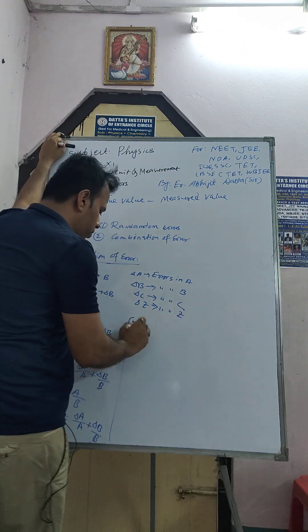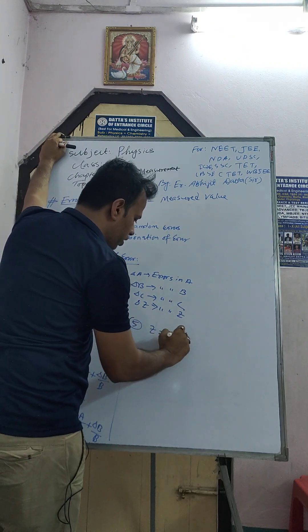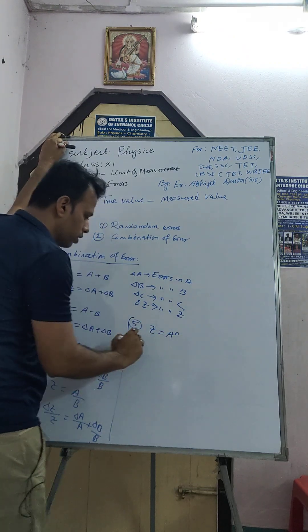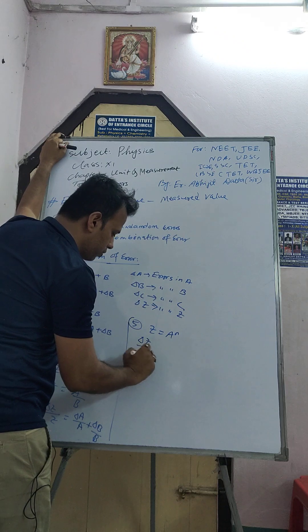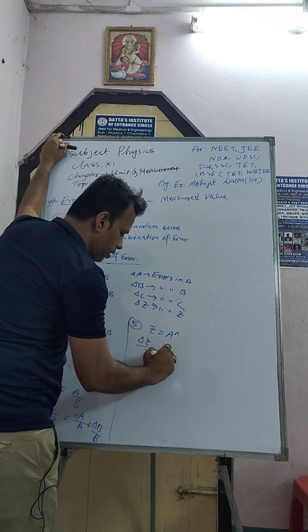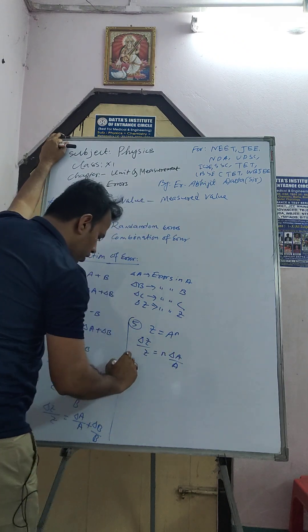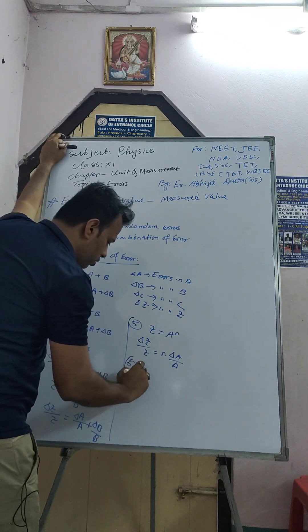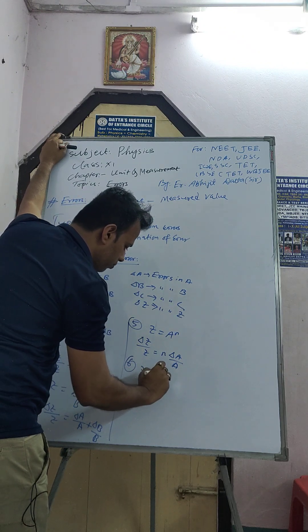Formula 5: if z equals a to the power n, then del z by z equals n into del a by a.